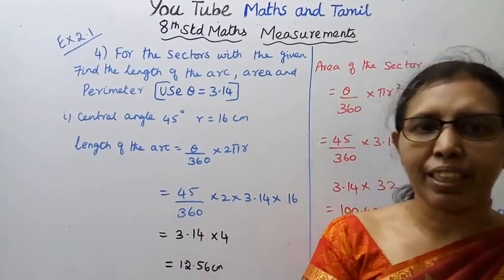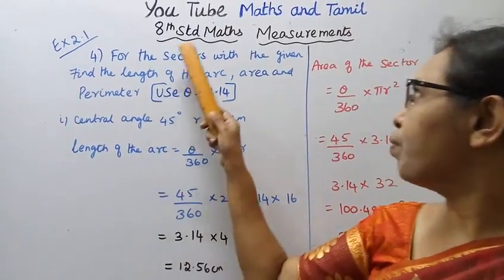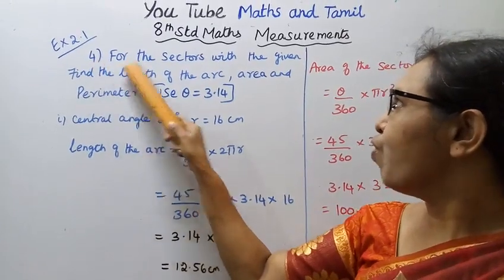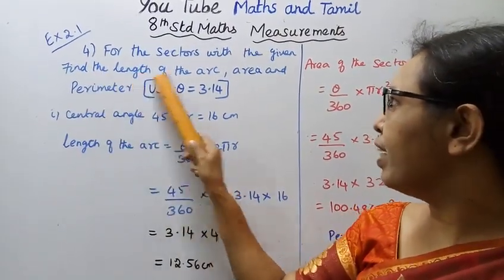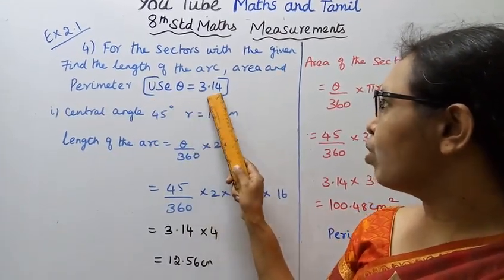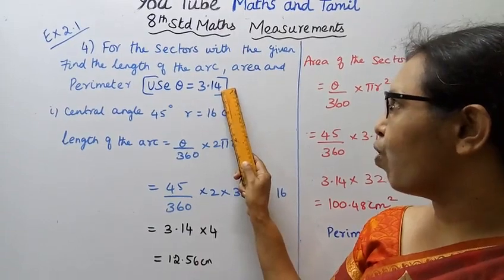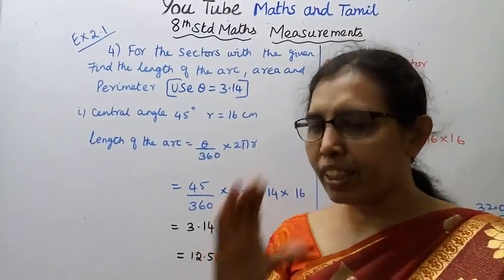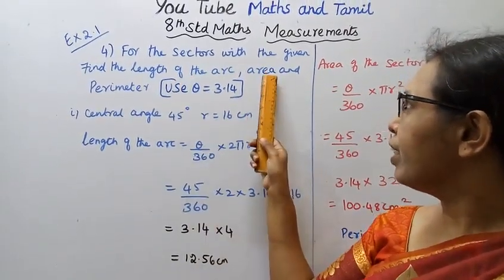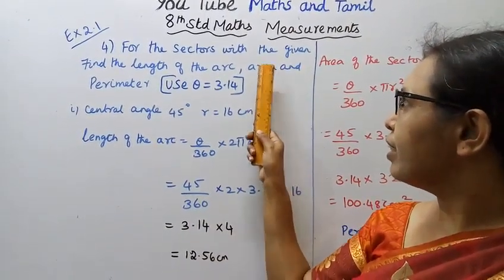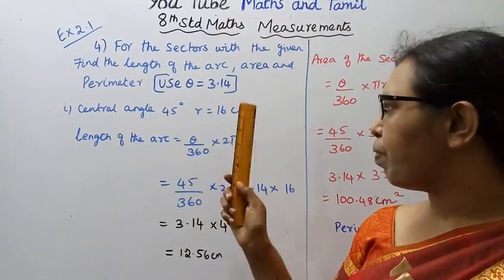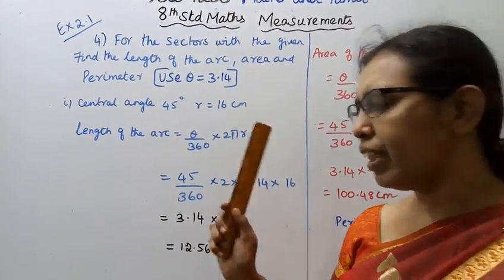Hello students, welcome to Max and Tumble channel. This is measurements exercise 2.1 for fourth standard, sectors. Given: find the length of the arc, area, and perimeter. Use theta equal to — refer to page 40 in the textbook for the length of arc, area of sector, and perimeter of sector formulas.